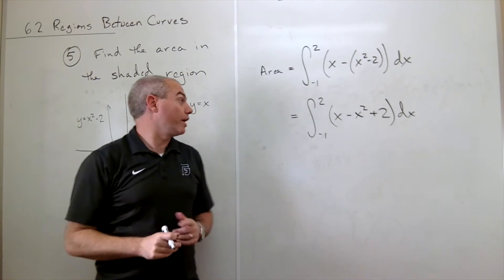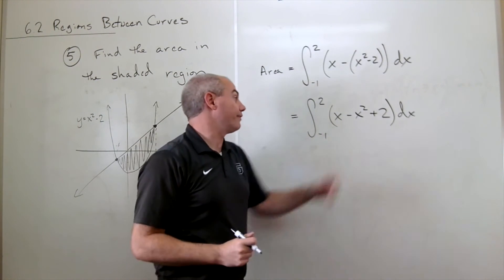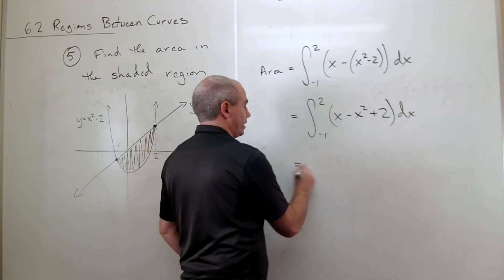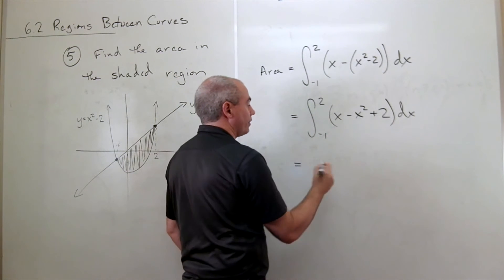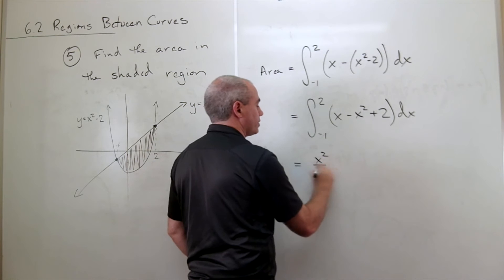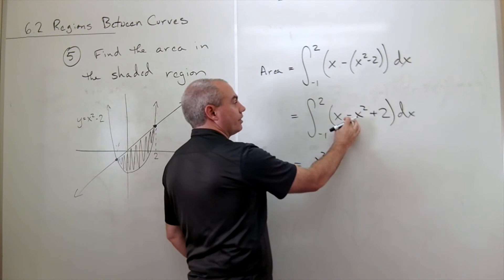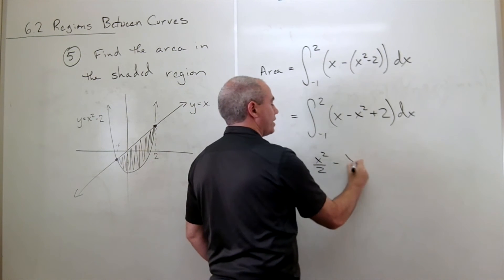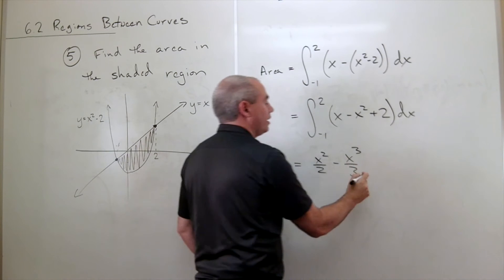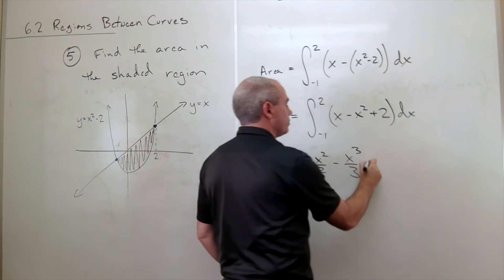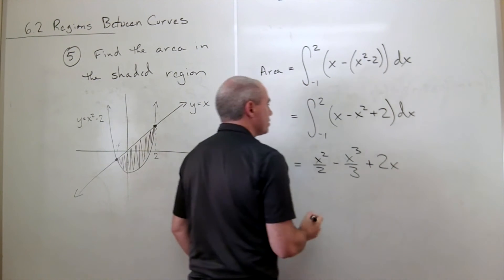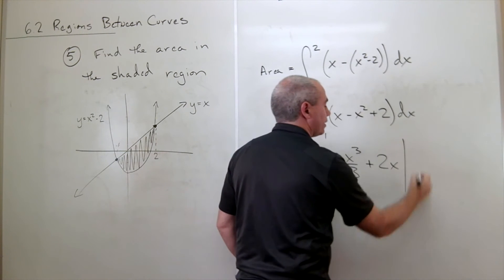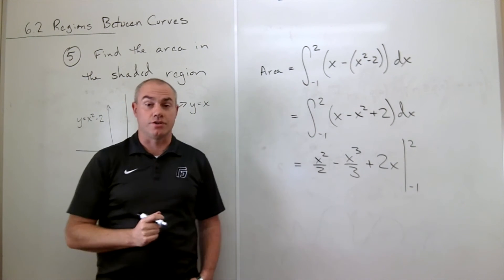Now we're ready to go ahead and take an antiderivative here. If I take an antiderivative of x, I get x squared over two. If I take an antiderivative of negative x squared, I get minus x cubed over three, and antiderivative of two is two x, all of that will be evaluated from minus one to two.